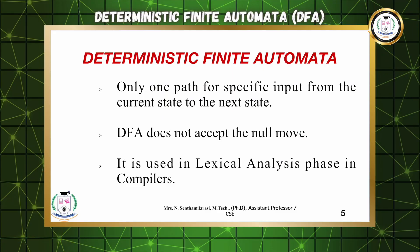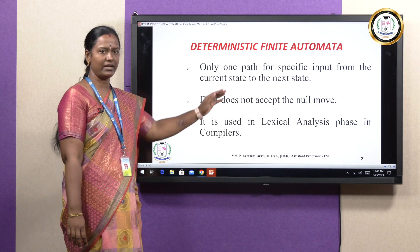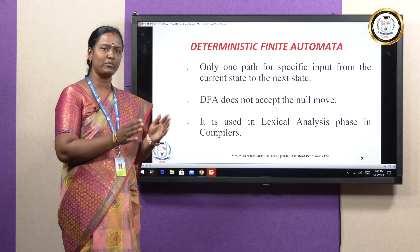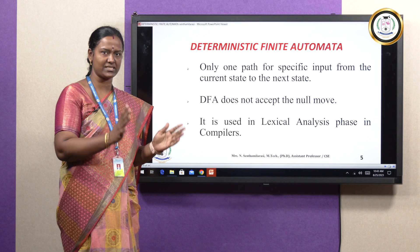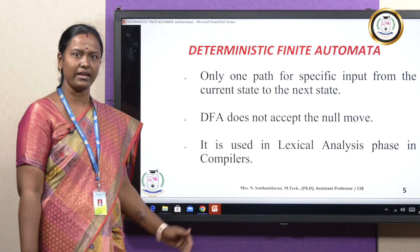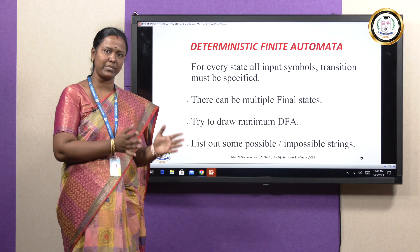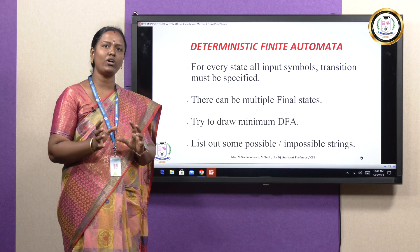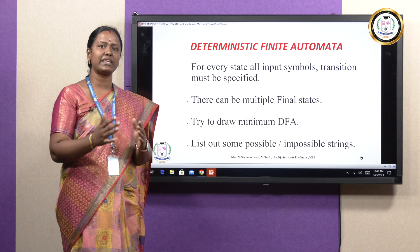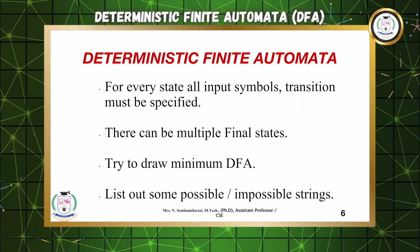In deterministic finite automata, there is only one path for a specific input from the current state to the next state. If you give one input, it moves from one state to another state only — it will not move to multiple states. There are no epsilon moves in DFA. It is used in the lexical analysis phase of a compiler. For every state, all input symbols and all transitions must be specified. There can be multiple final states but only one single initial state.